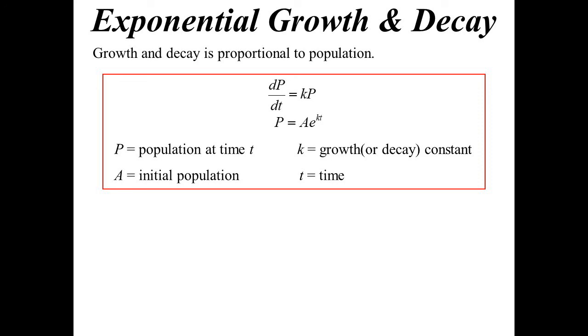K is our growth, or decay if it happened to be getting smaller, constant. And t of course represents time.